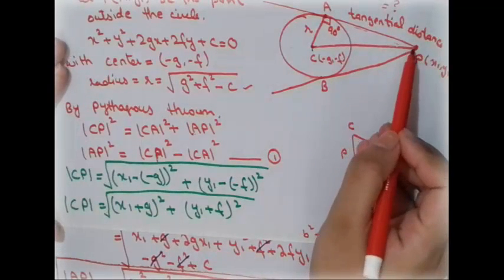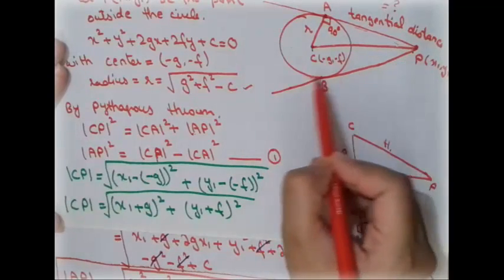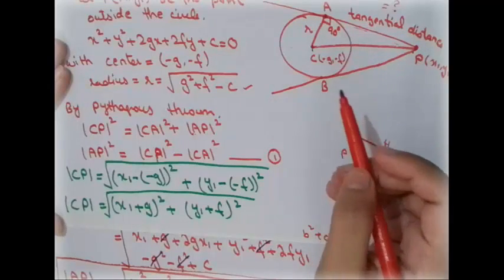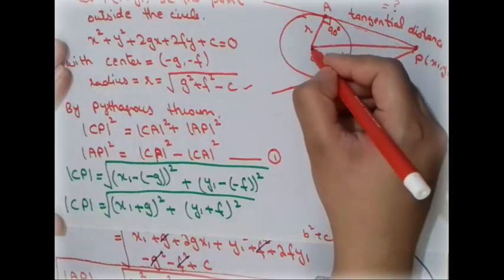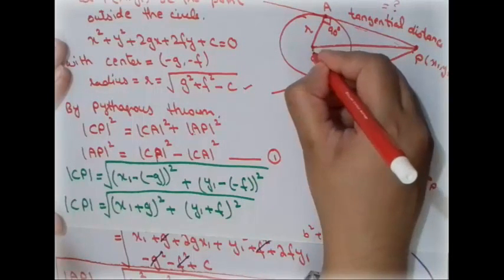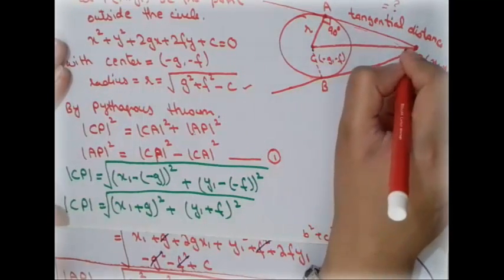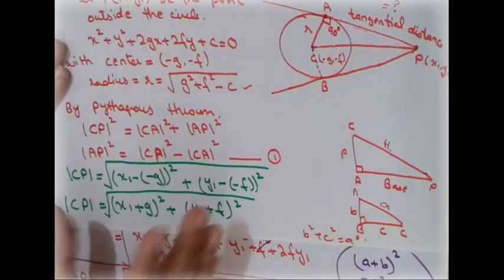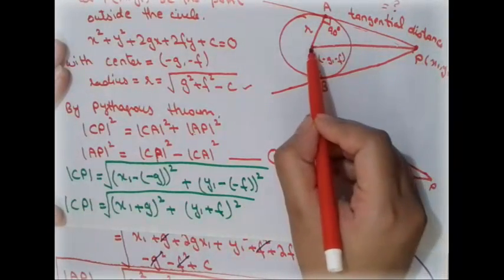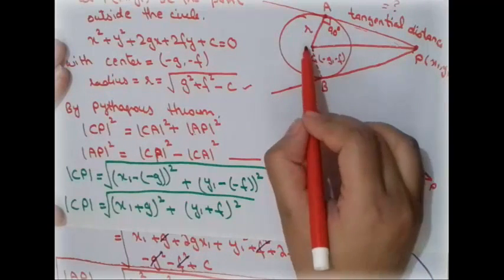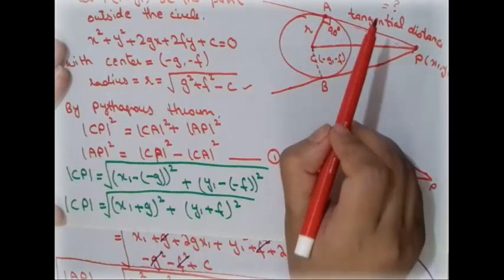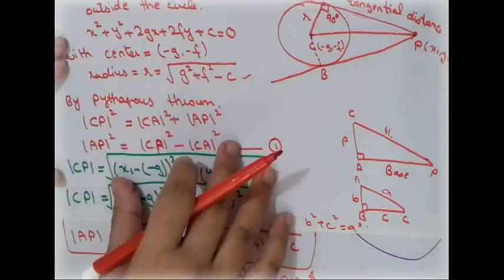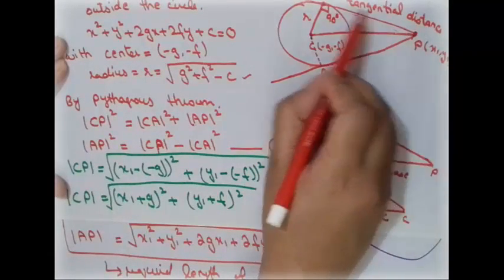As we noted, there are two tangent possibilities from external point P. In a similar way, drawing a perpendicular to point B gives triangle PCB. Following the same steps for BP, since the length of tangents drawn from an external point to a circle are equal, BP = AP = √(x₁² + y₁² + 2gx₁ + 2fy₁ + c).